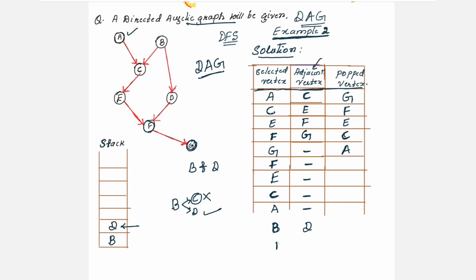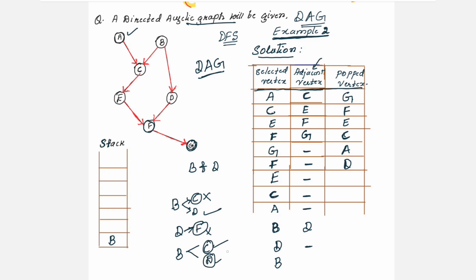Select that D and check the adjacent vertices for D. For D, you have only one vertex, F, which is already visited. So no more neighbors for D — it will be a dash. You need to pop out, so D will be brought to the popped vertex column. Now one more element is remaining in the stack. Take that element and check its neighbors. In the graph, B has got neighbors C and D; both are visited. So no more neighbors for B — pop it out and place it in the popped vertex column.